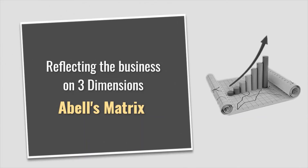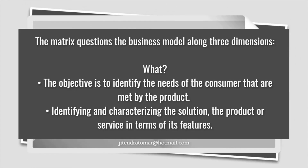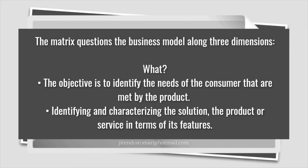Reflecting the business on the three dimensions. The matrix is built to question the business model along three dimensions. The first dimension is: What? In this dimension, the objective is to identify the needs of the consumer that are met by the product. This is done by identifying and characterizing the solution — the product or service — in terms of its features that it brings to the customer segments identified in the Who category. These features may include improved effectiveness or efficiency, better risk management, and greater well-being, among others.